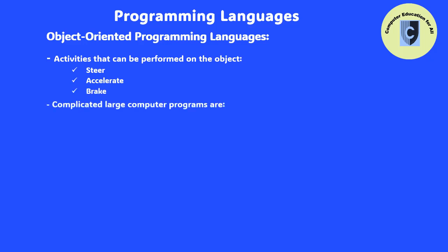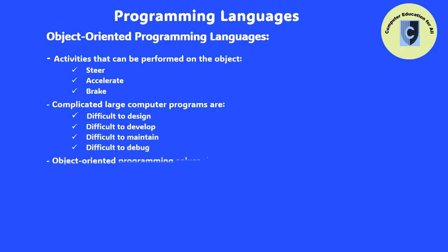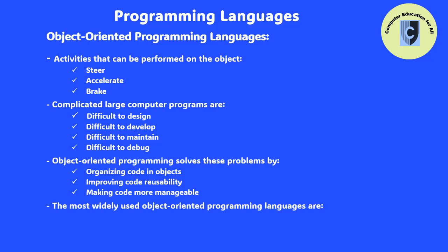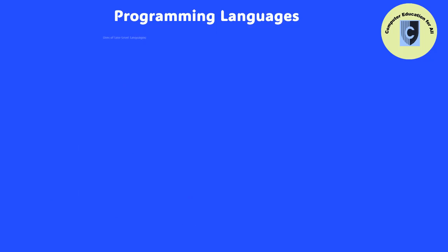Complicated large computer programs are difficult to design, develop, maintain, and debug. The concept of object-oriented programming solves this problem. The most widely used object-oriented programming languages are C++, Visual Basic, C# (known as C Sharp), and Java.